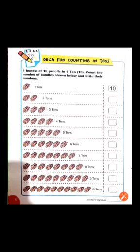Next one is five tens — five bundles of pencils ہیں ہمارے پاس, each bundle having ten pencils. تو ہم سب کو count کریں گے تو یہ کتنے بن جائیں گے؟ Fifty — یعنی کہ five tens. آگے ہے six tens — ہمارے پاس six bundles of pencils ہیں, each bundle having ten pencils. ایک bundle میں ہمارے پاس کتنی pencils ہیں؟ Ten. تو جب ہم six tens کو count کریں گے تو یہ کتنے بن جائیں گے؟ Sixty — یعنی کہ six tens.